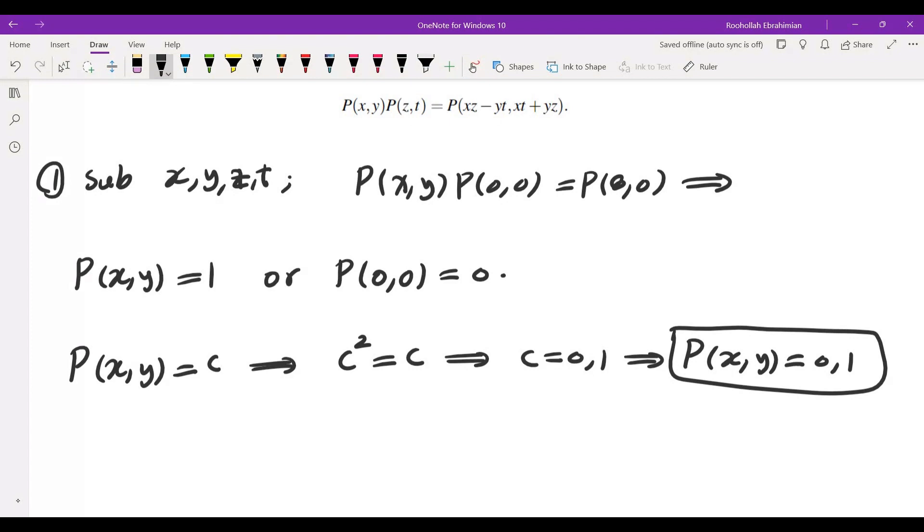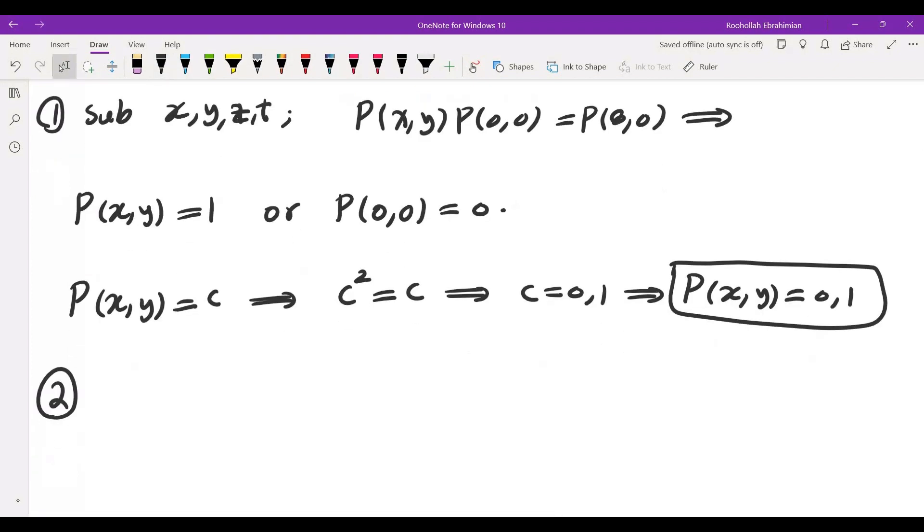Okay, so let's assume from now on that our polynomial is not constant. So the second thing that we can do is to test this for different possibilities of P depending on its degree. We already checked the constants. What if P of X comma Y is a linear polynomial? Let's see what that gives me.